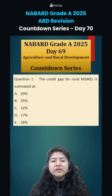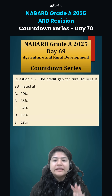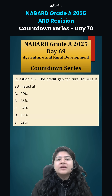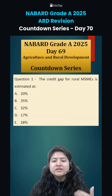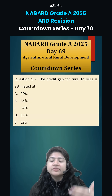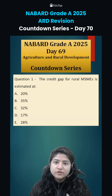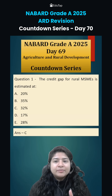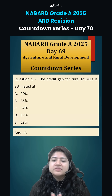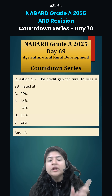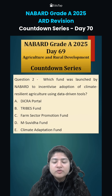Question number one: what is the credit gap for rural MSMEs? Credit gap means an MSME went to the bank to ask for some amount and what was actually given — this difference is the credit gap. For example, if the MSME wants 100 rupees and the bank gave only 68 rupees, that 32% is the credit gap. As per the NABARD annual report, it is 32%.